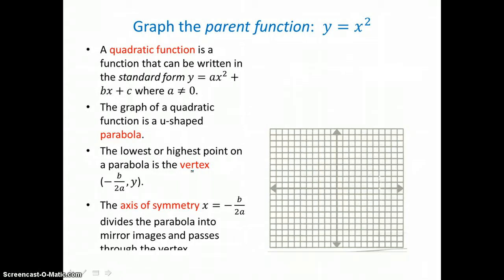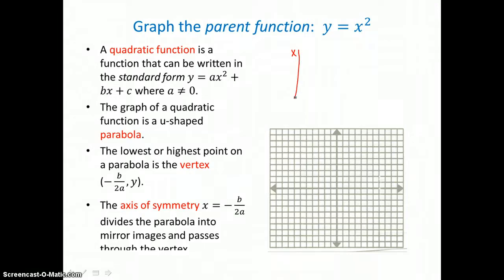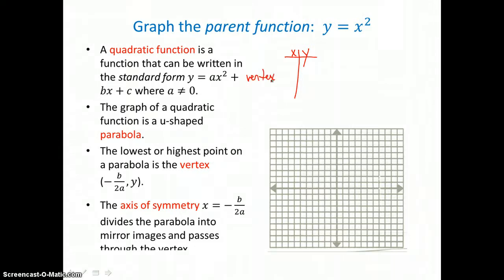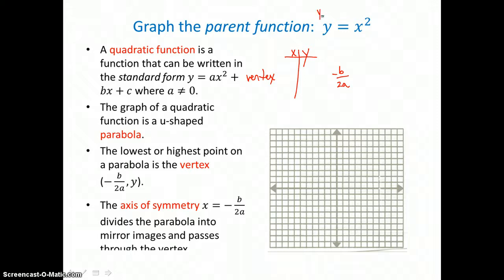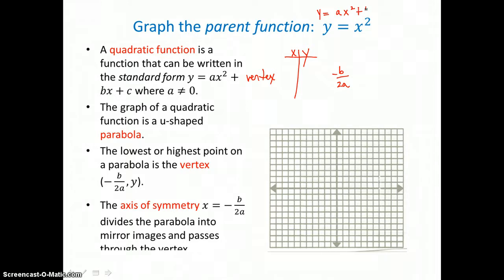To graph it, we're going to make a table of values. In that table of values, the first point we're going to find is the vertex. The vertex is either the low point or the high point for the u shape, and the x-coordinate of the vertex is negative b over 2a. Our quadratic equation is always of the form y equals ax squared plus bx plus c.